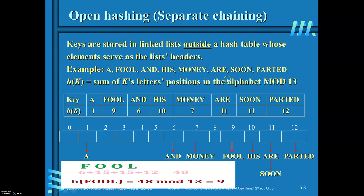We will see how you can organize the keys in the open hashing technique. Keys are stored in linked lists outside a hash table whose elements serve as list headers. Here, given eight keys are to be organized in a table of size 30. For that, define a hash function k mod 13. For 'a', it occurs in the first position in alphabetical order, so 1 mod 13 is 1, 'full' is 9, and 'and' is 6.